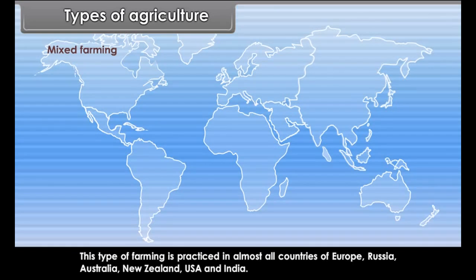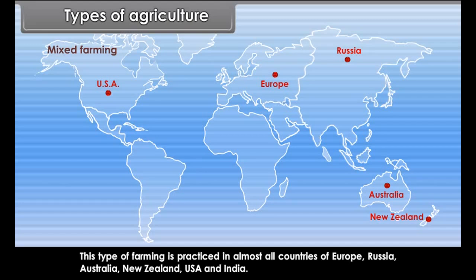Mixed farming is practiced in almost all countries of Europe, Russia, Australia, New Zealand, USA and India.